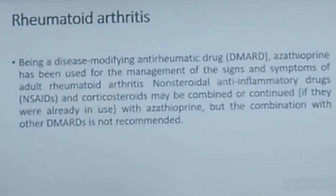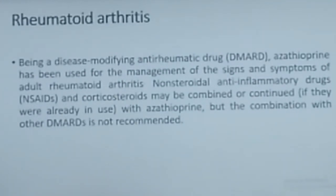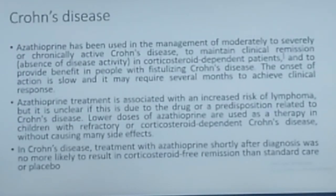Being a disease-modifying anti-rheumatic drug, azathioprine has been used for management of the signs and symptoms of adult rheumatoid arthritis. NSAIDs and corticosteroids may be combined or continued with azathioprine if they were already in use, but combination with other DMARDs — disease-modifying anti-rheumatic drugs — is not recommended.